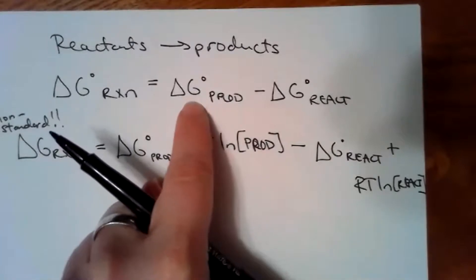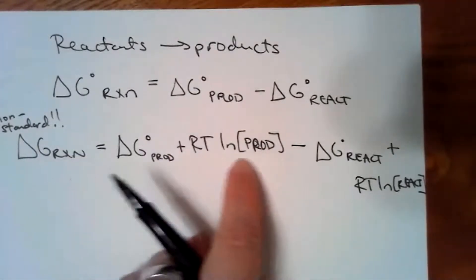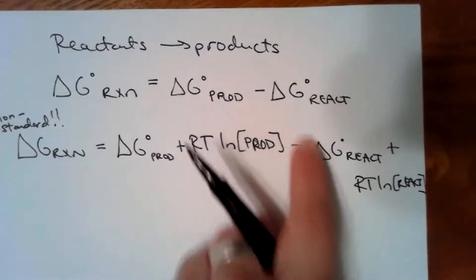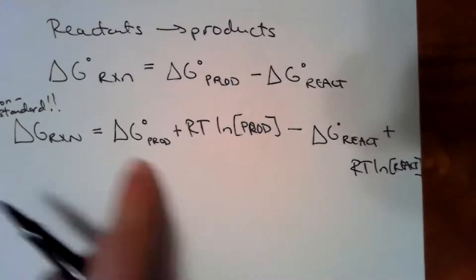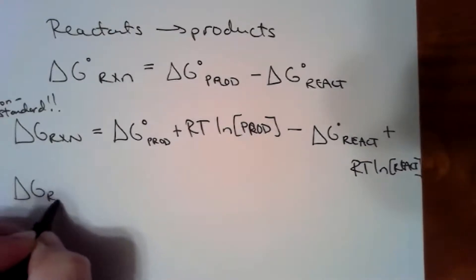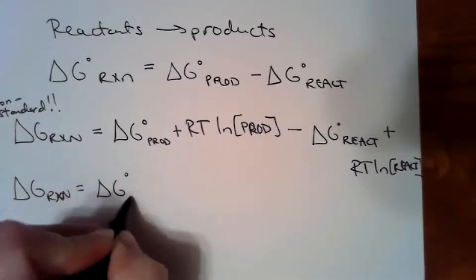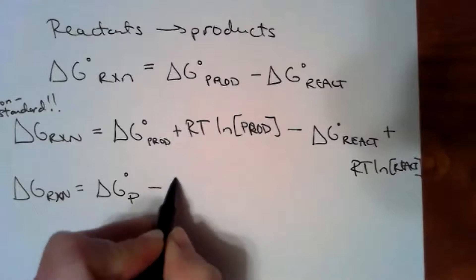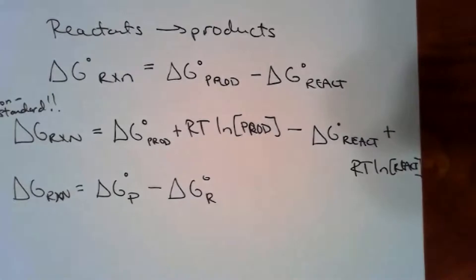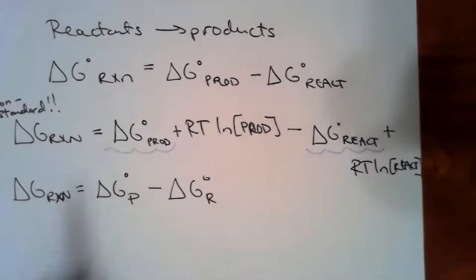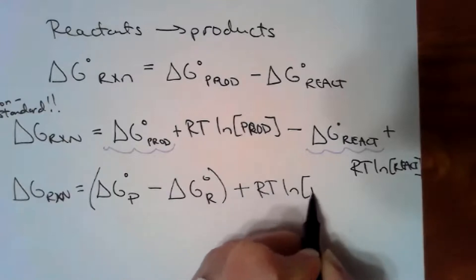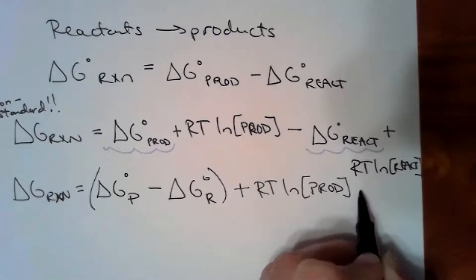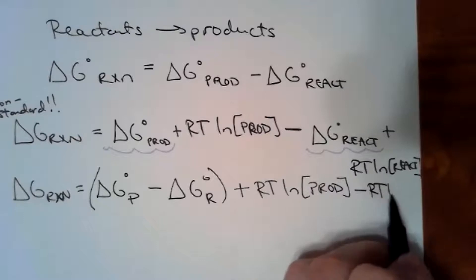So delta G non-standard of the products is delta G standard plus RT ln correction factor, and delta G non-standard of the reactants is delta G standard plus its correction factor. Gathering terms together: delta G non-standard equals delta G standard of products minus delta G standard of reactants, plus RT ln of products minus RT ln of reactants.